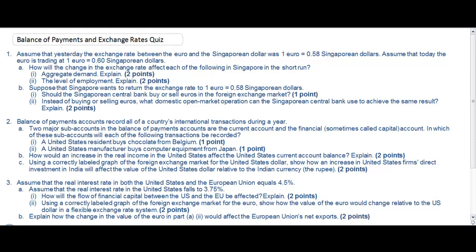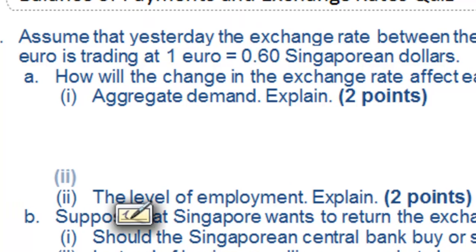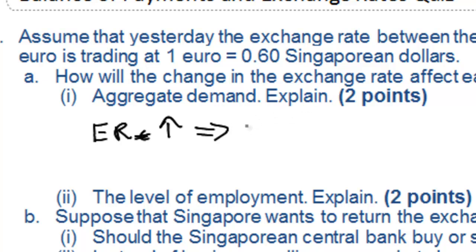Pause the video here and read the first question before we get into our first worked solution. The first question asks about an increase in the exchange rate of the euro against the Singapore dollar from 0.58 Singapore dollars per euro to 0.6 Singapore dollars per euro. In the beginning we're asked to explain the impact that this will have on aggregate demand in Singapore.